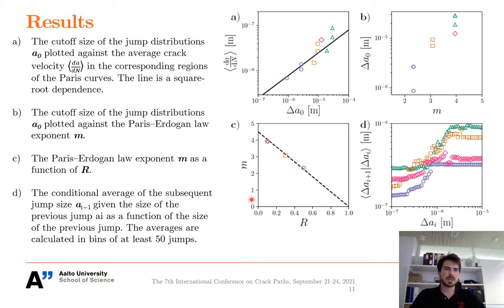The behavior of the cutoff value can be quantified by taking the cutoff size determined for each of the distributions, and plotting it against the average crack velocity in the corresponding region of the Paris curve. Here we can see the clear correlation between the cutoff values and the average velocity. We also found that the cutoff has a direct correlation with the exponent M. The systematic R-value relation to this is shown here, where we see the linear relation, and thus, of course, the larger R, the smaller the M. Thus, in the creep limit where R equals 1, the crack velocity would tend to be a constant.